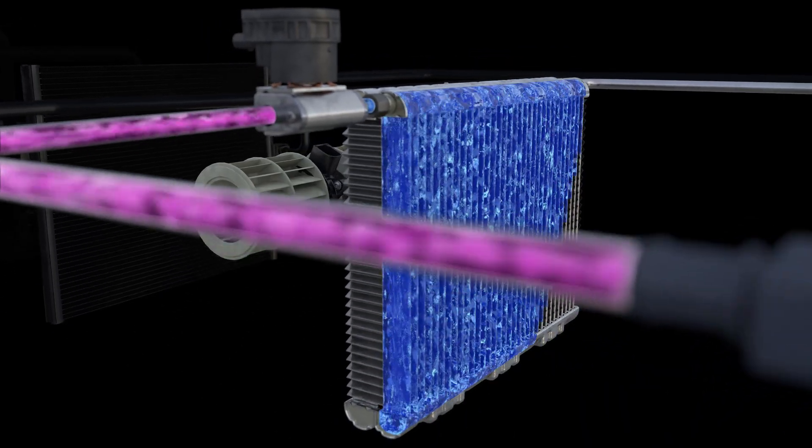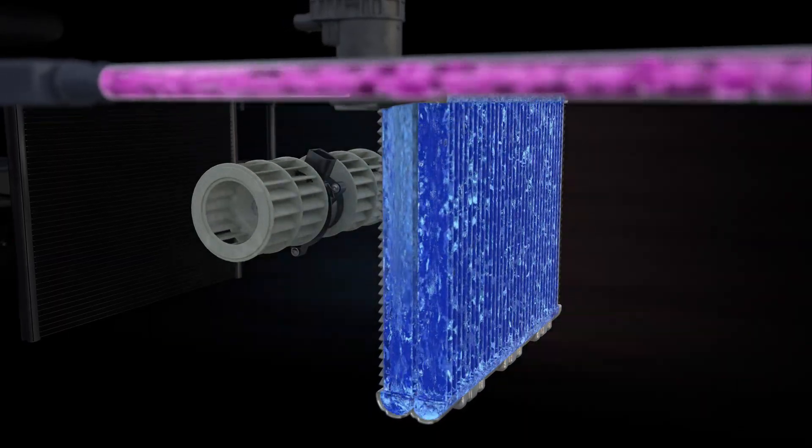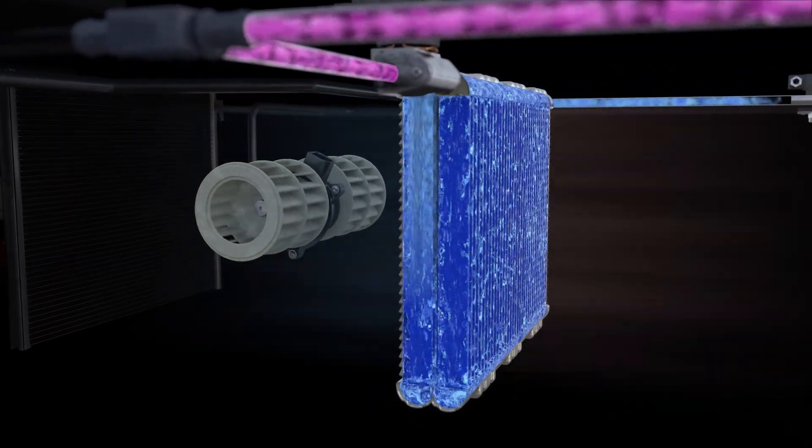In the evaporator, the liquid eventually becomes gaseous again and cools down even further. The fresh air that the blower supplies to the cabin is thus cooled by means of evaporation cooling.